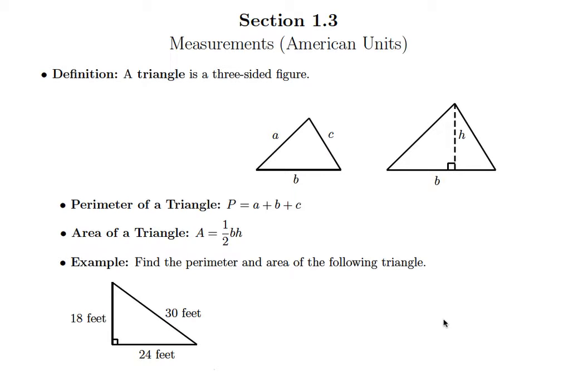So the perimeter is just simply going to be to add up the three sides, right? Because we know that the perimeter is just the distance around an object. So we just simply add up these three sides we see in our triangle.